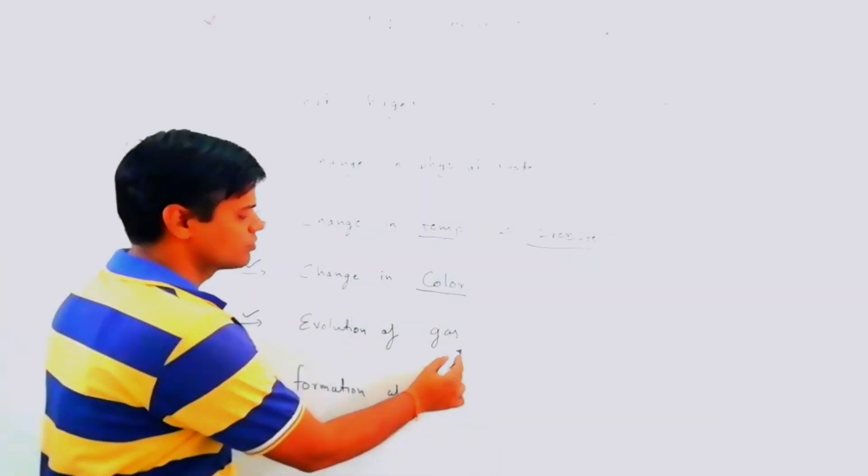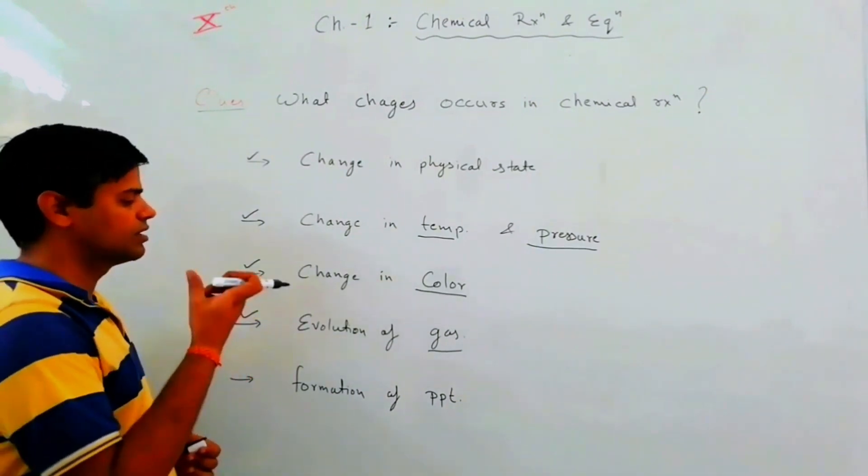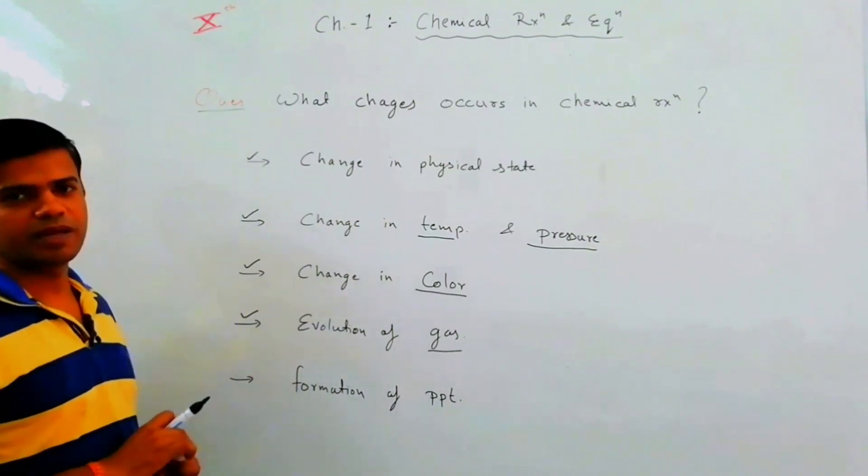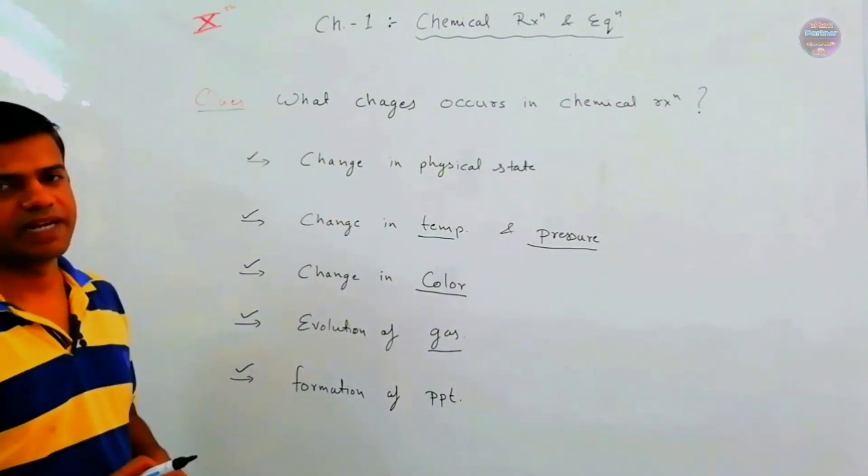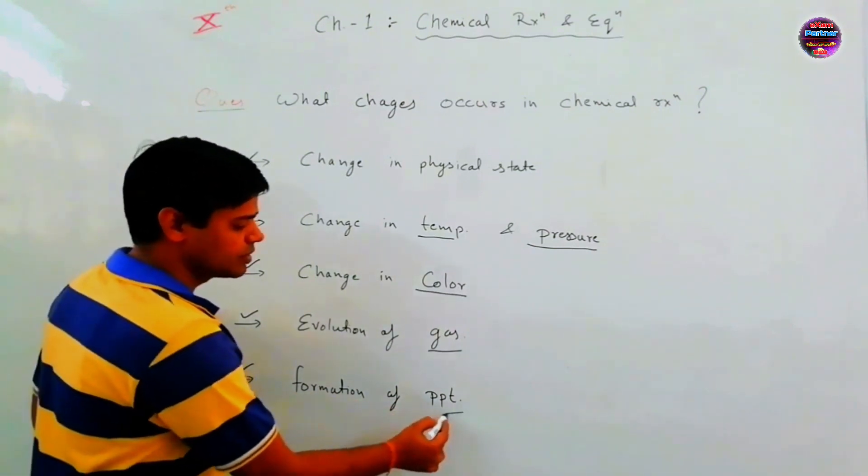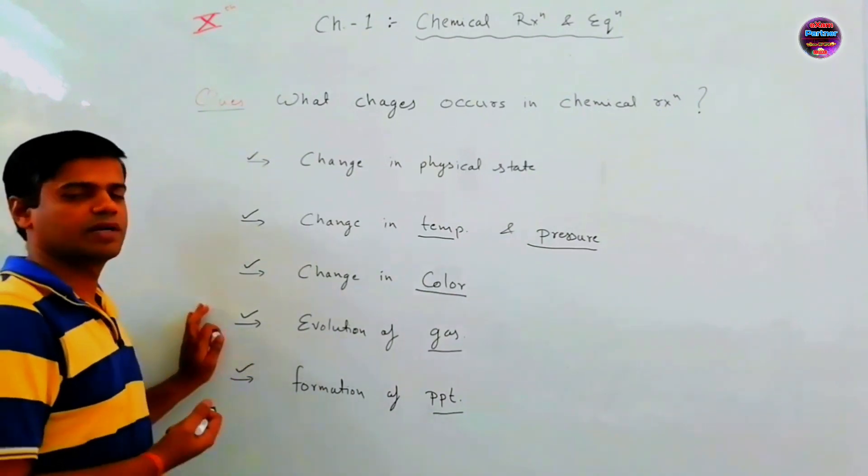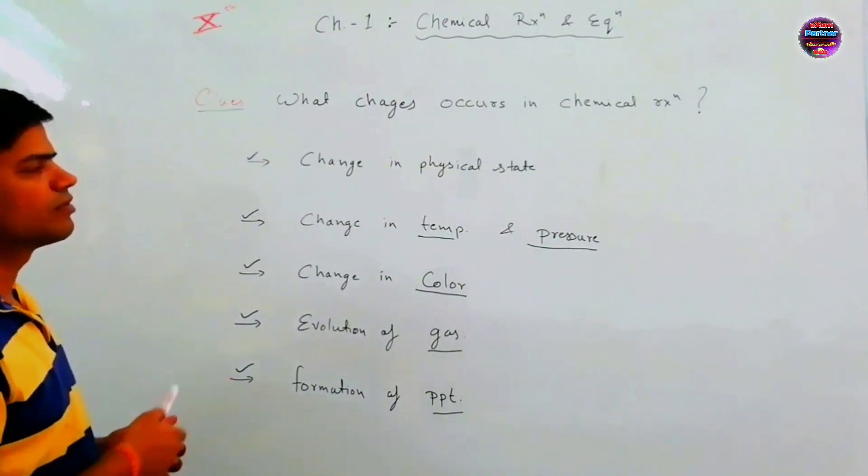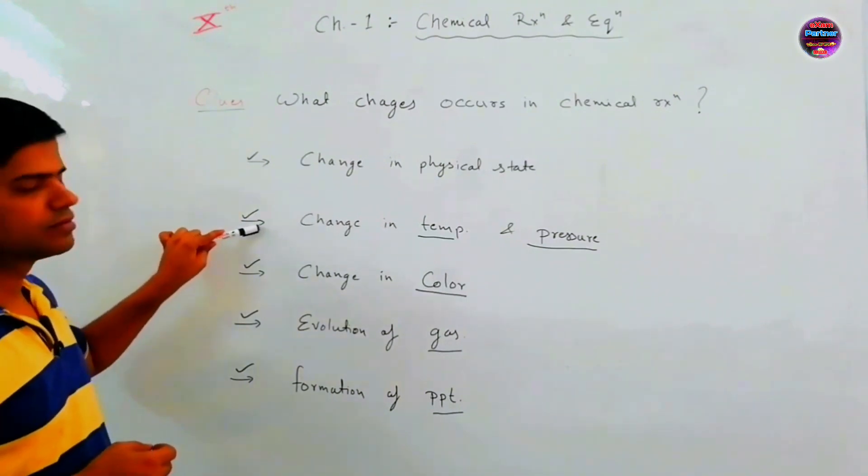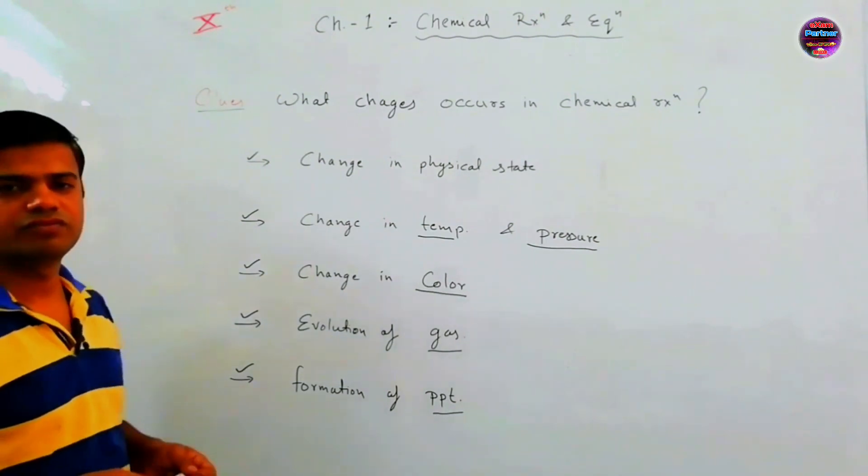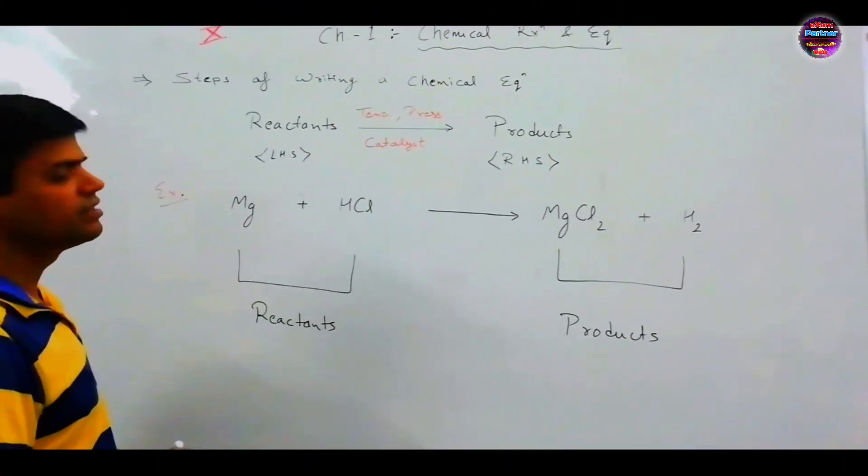Next, evolution of gas. This is called effervescence. This means bubbles formation, gas evolution. This means chemical change. And last, formation of PPT, formation of precipitation. PPT is the insoluble substance in water. If PPT is formed, it is chemical change. This means the change in physical state, change in temperature and pressure, change in color, evolution of gas, formation of precipitation. If we observe these changes, we can identify chemical reaction.